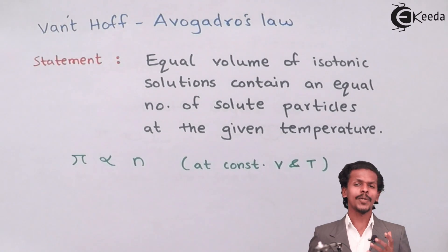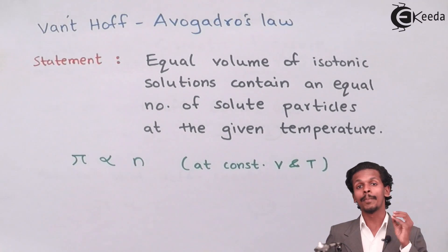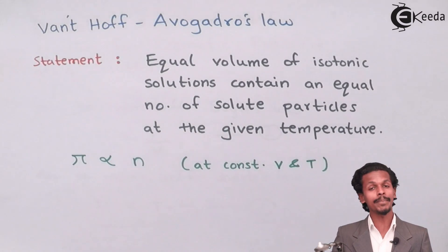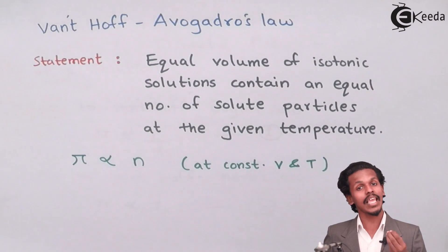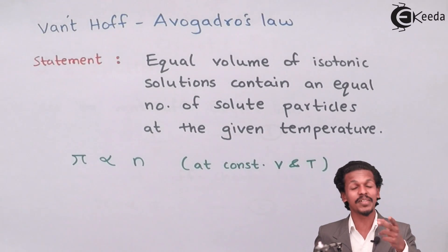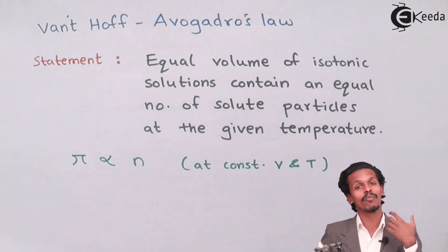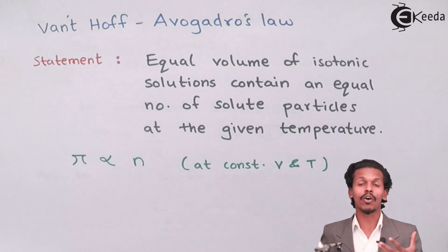It means suppose if I consider two solutions which have the same osmotic pressure and which have same volume in it, this shows that both of the solutions will have same number of solute particles. And vice versa, if the two solutions have the same concentration or have the same volume, then the osmotic pressure of both the solutions will be the same. And since the osmotic pressure of both the solutions will be the same, it is said to be an isotonic solution. So based on these three laws, we have defined what is van't Hoff-Boyle's law, what is van't Hoff-Charles law and what is van't Hoff-Avogadro's law.